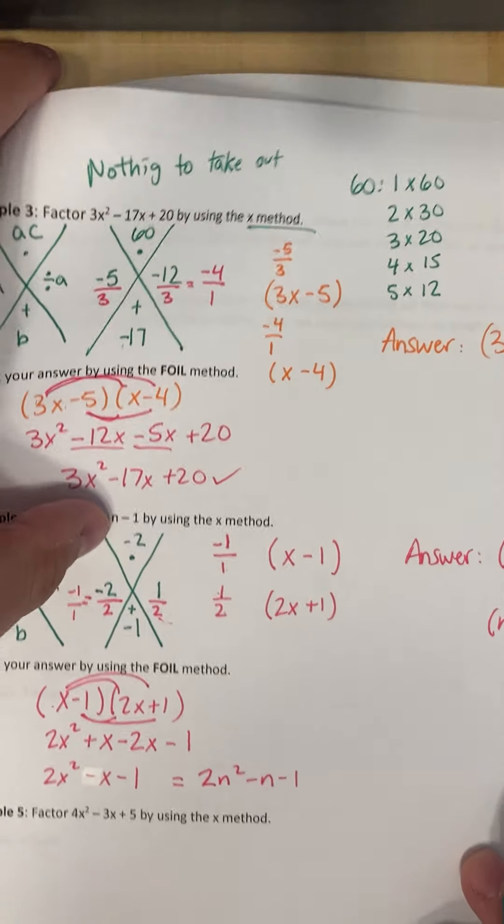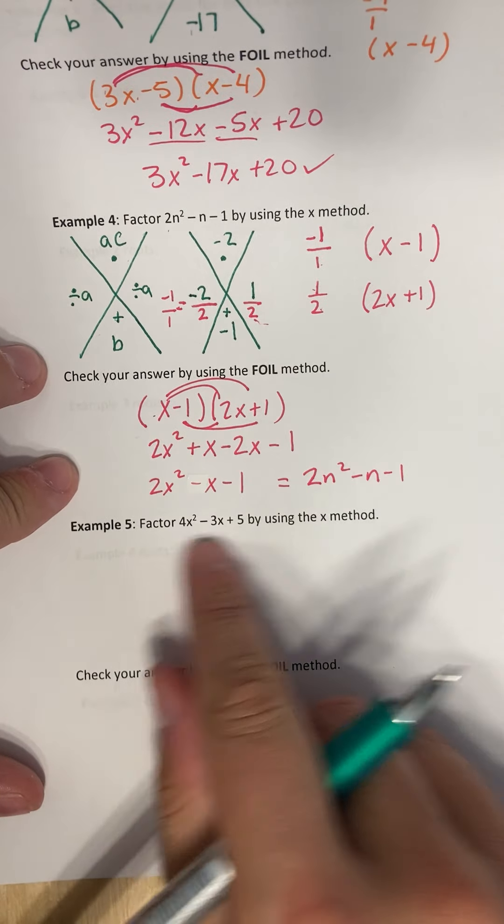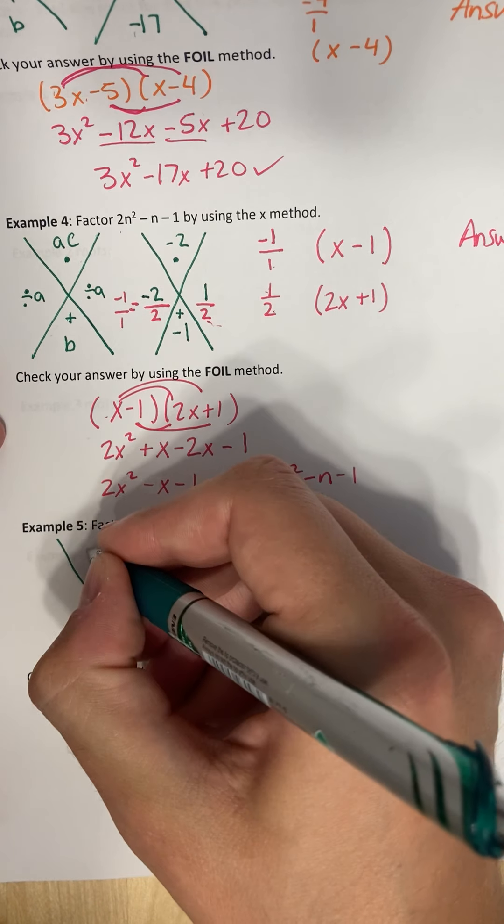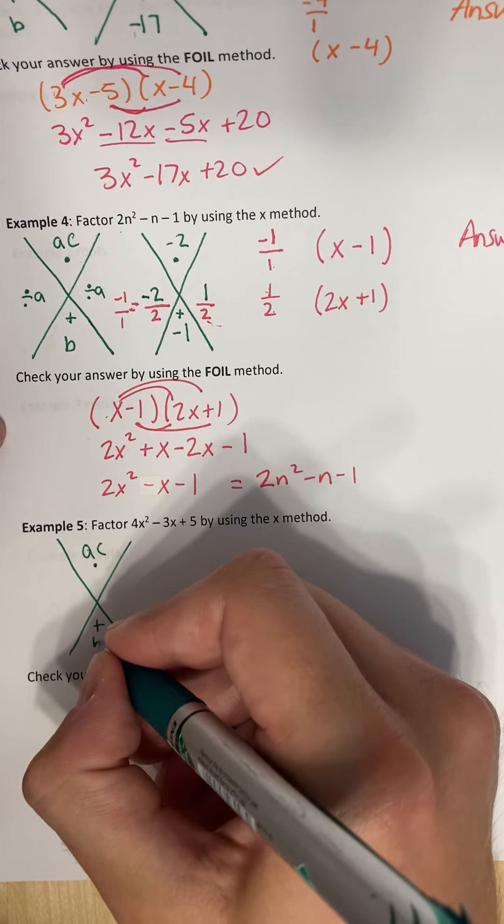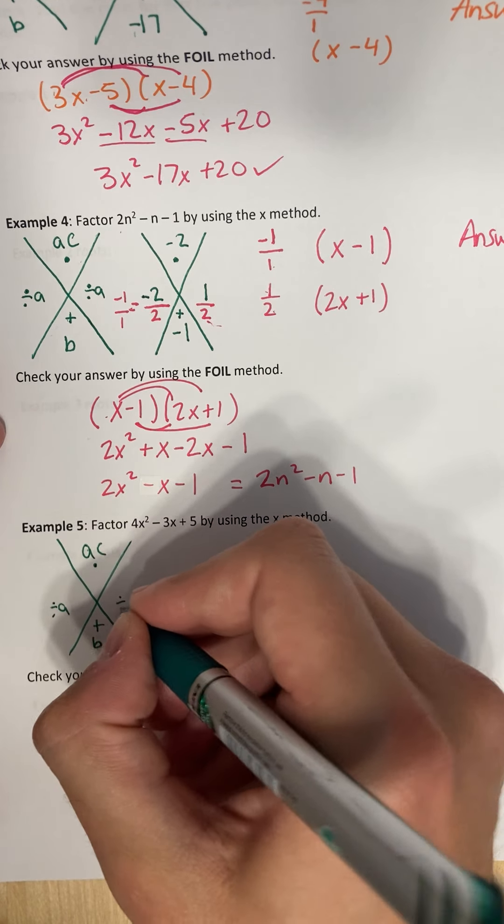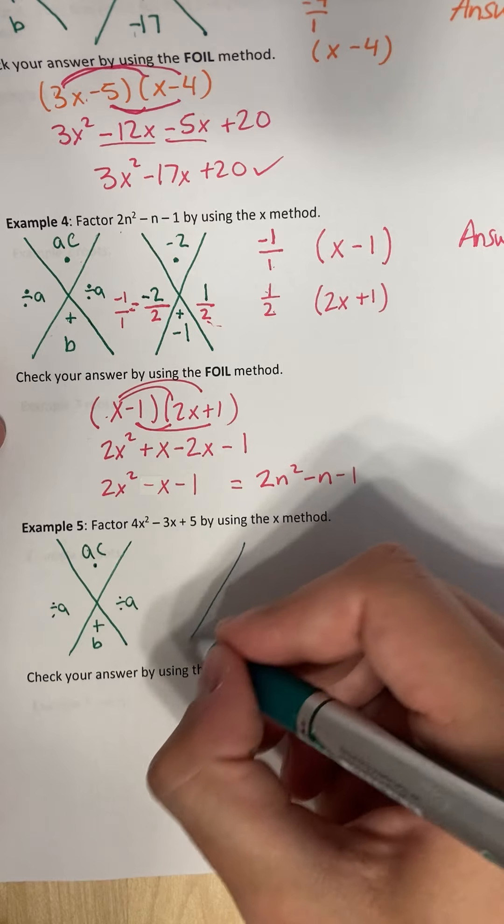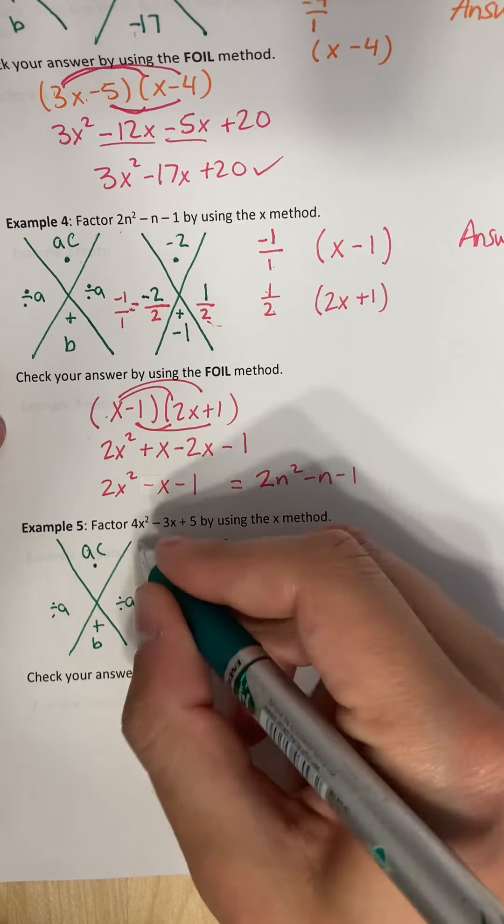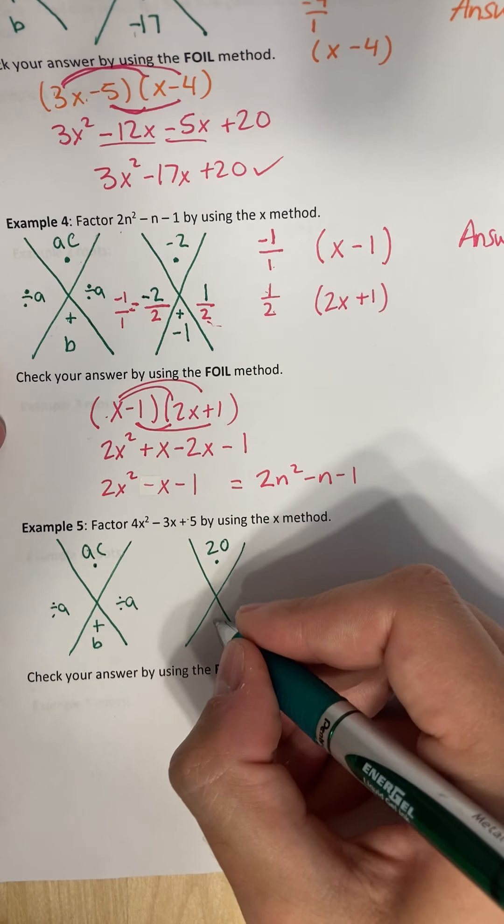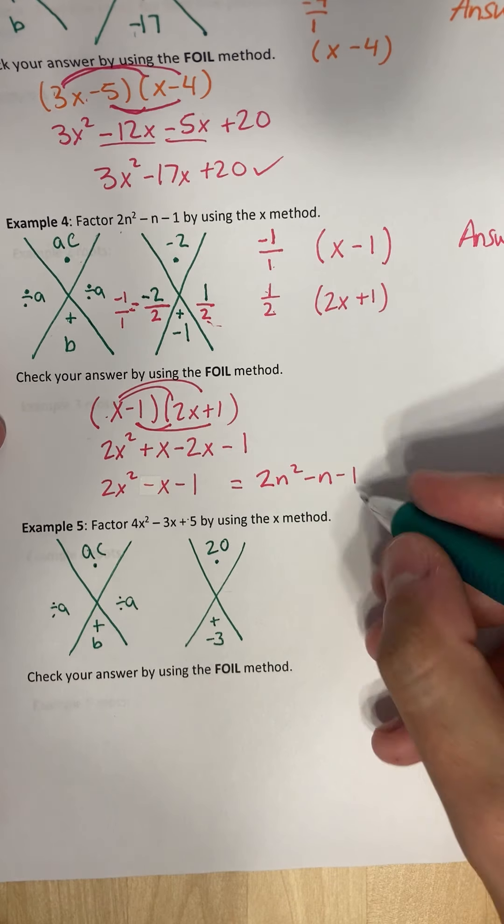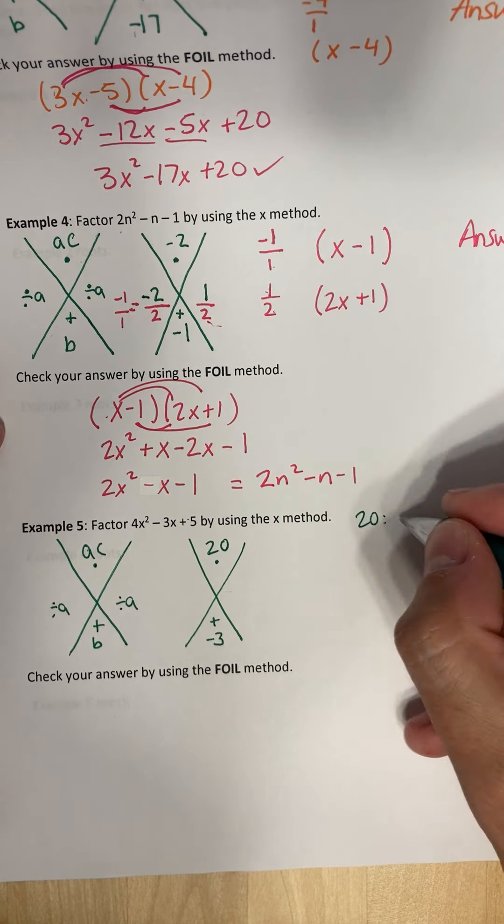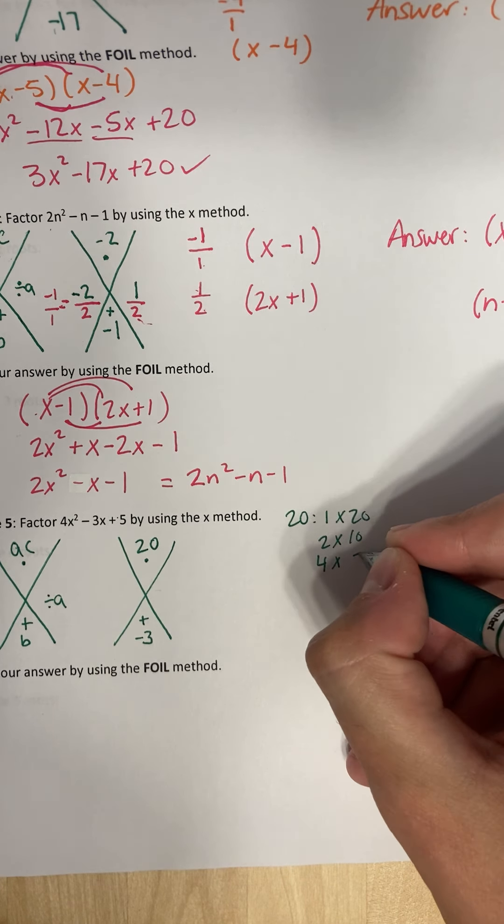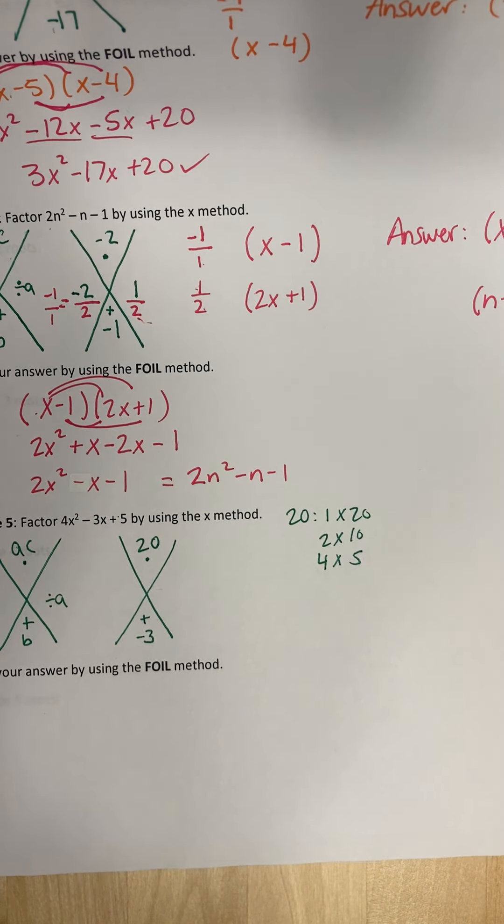All right. Example five. Again, let's do our x. A, C, B, we want to divide by A, divide by A. See what we get. So 20 will go here. A, four times five is 20. And B is our negative three. So let's start listing the factors of 20. We've got one times 20, two times 10, four times five. And that's it.